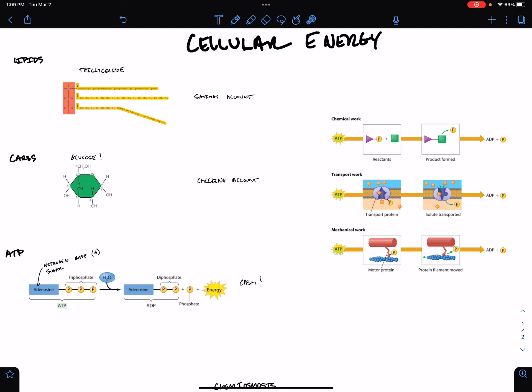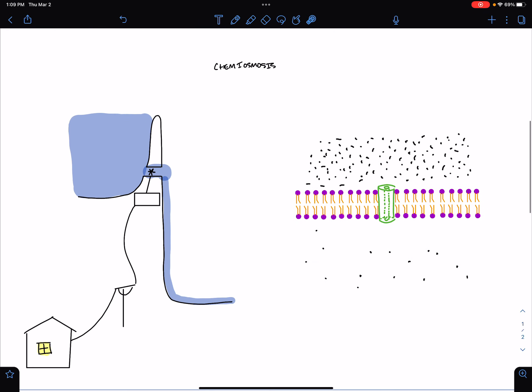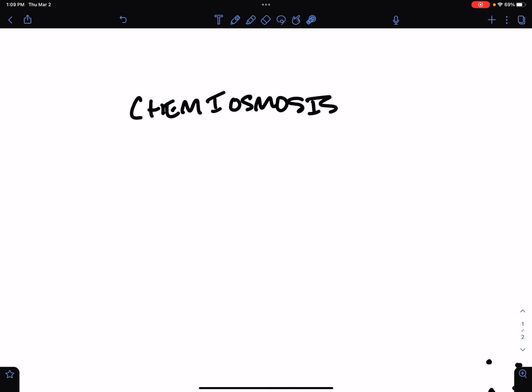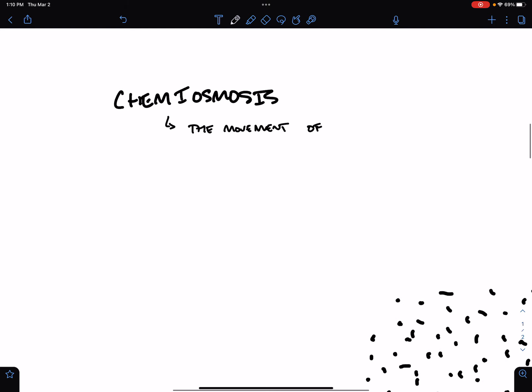These are all the ways ATP is used inside the body. Then there's another way that the cell stores and uses chemical energy, and it is called chemiosmosis. You know what osmosis is - the movement of water across a semi-permeable membrane. But chemiosmosis is the movement of ions across a semi-permeable membrane.